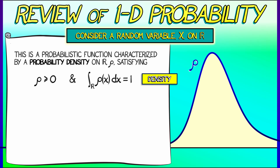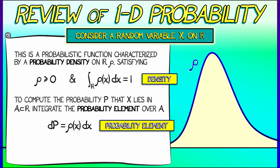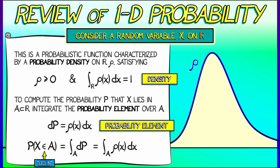To compute the probability P that your random variable x lies in some subset A of the reals, you integrate the probability element dP over A. This probability element dP is rho(x)dx, so the probability that x lies in A is the integral of rho(x)dx over A.